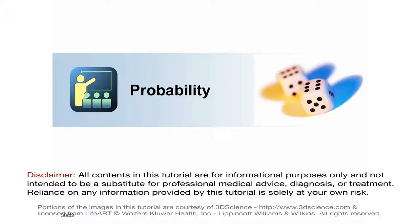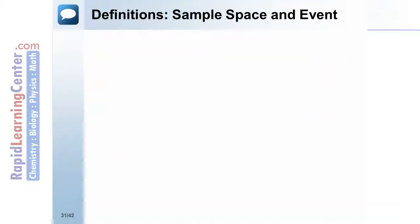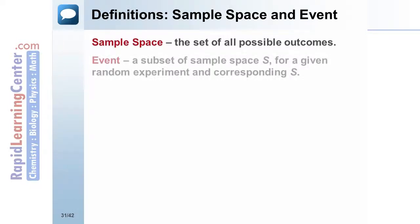The final section will discuss probability. Sample space is the set of all possible outcomes. An event is a subset of sample space S for a given random experiment and corresponding sample space S.